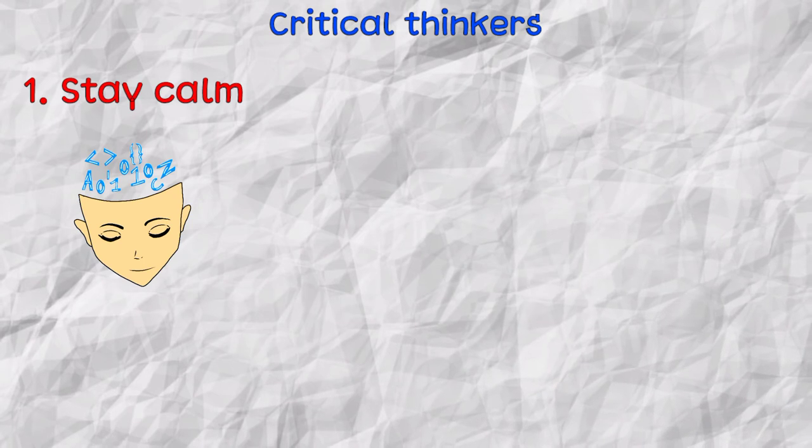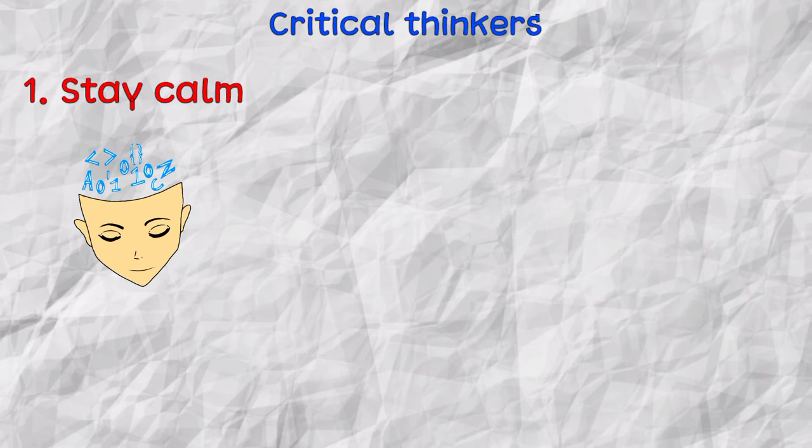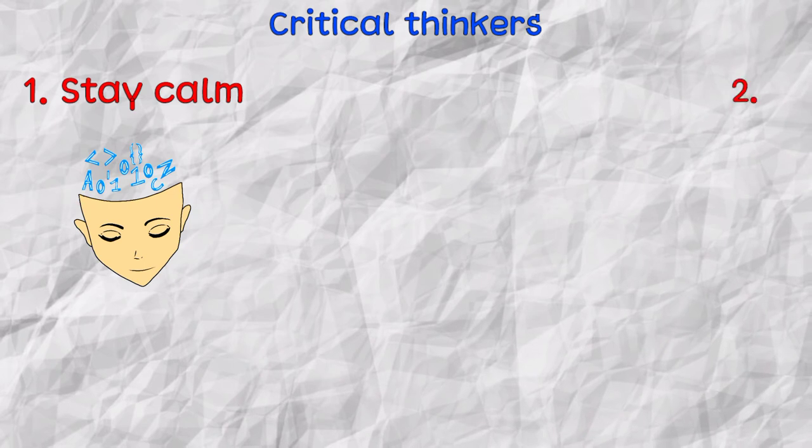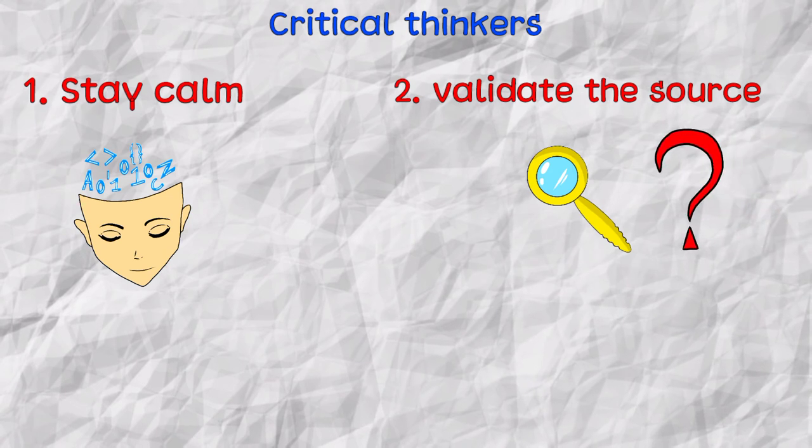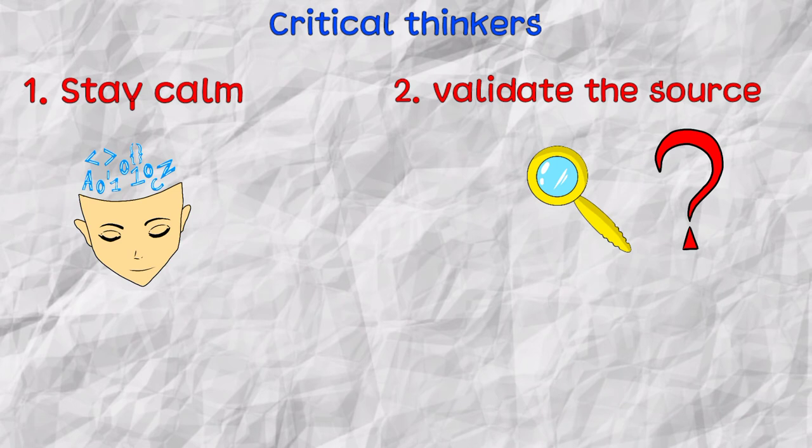Second is that they will validate the source. Critical thinkers search for the source of the information and validate the source to make sure the information provided is true. They ask questions like, where did you hear that? Who said that? And other questions that lead to the source.